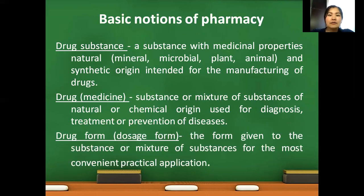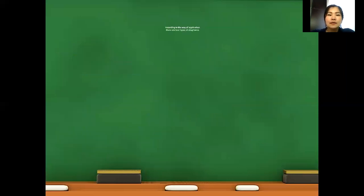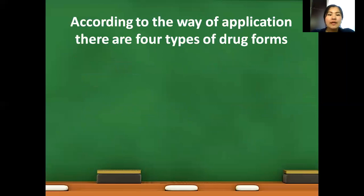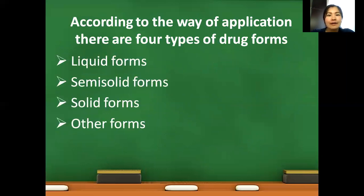Next, our notion is drug form, or dosage form. It is a form given to a substance or mixture of substances in pharmaceutical factories for the most convenient practical application of them. According to the way of application, there are four types of drug forms: liquid forms, semi-solid forms, solid forms, and other forms.